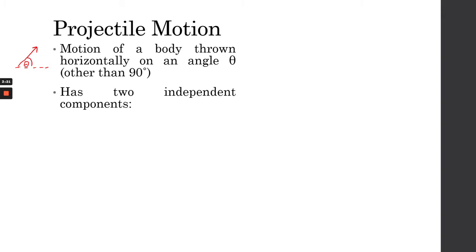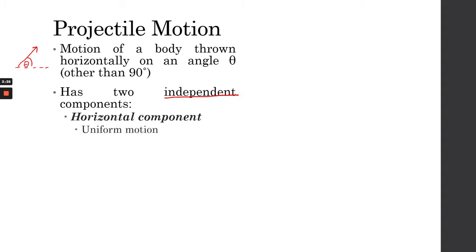Projectile motion has two independent components. I want you to take note of the word 'independent,' which means these two components do not affect or rely on each other. The horizontal component is uniform motion, while the vertical component deals with freefall or free falling motion. To solve problems in projectile motion, we need a good knowledge of uniform motion and freefall, because combining these two is actually how we get projectile motion.